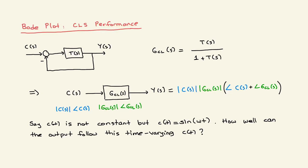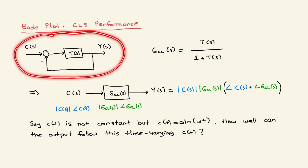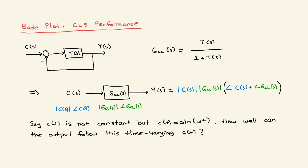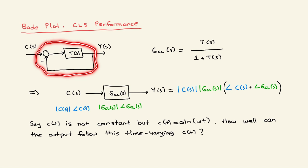I would like to talk about how you can use Bode plots to assess closed-loop system performance in terms of command following. Let's look at this closed-loop system — you have a transfer function, which can be the multiplication of a controller transfer function and a plant transfer function. I am going to denote it as T(s). For this unity feedback configuration, you can write the closed-loop system as T(s) divided by 1 plus T(s). Note that you can have any other block diagram configuration; all you need to find is the closed-loop transfer function.